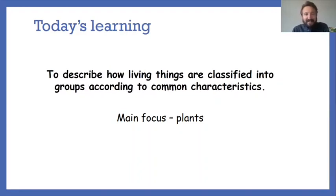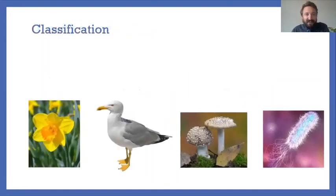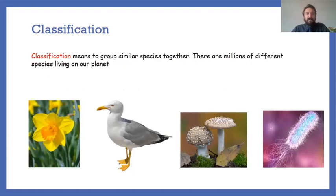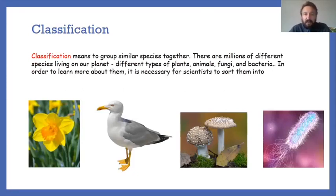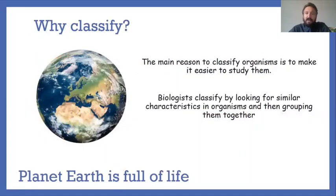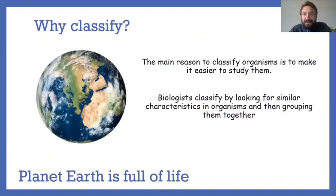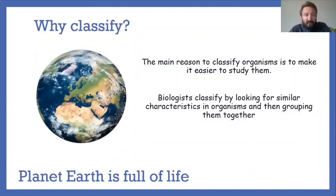Just to have a quick recap: classification means to group similar species together. We're talking about organisms here - different types of plants, animals, fungi, and bacteria. We do that because it makes it easier for them to be studied and understood. Biologists classify by looking for similar characteristics in organisms and then grouping them together. The Earth is full of life - not just humans and animals, but also microorganisms and plant life.